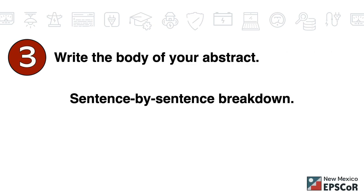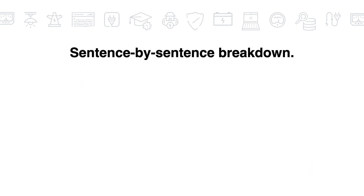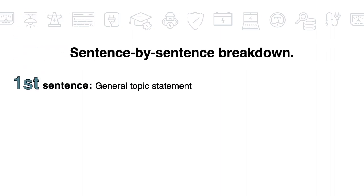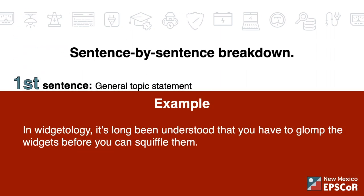Step three: write the main body of your abstract. We've broken this down sentence by sentence. First sentence: general topic statement. What's the big idea? For example: 'In Wiggettology, it's long been understood that you have to glomp the widgets before you can swivel them.'